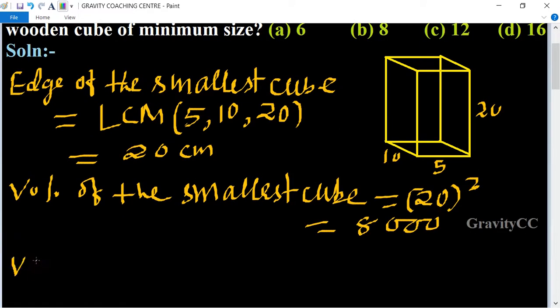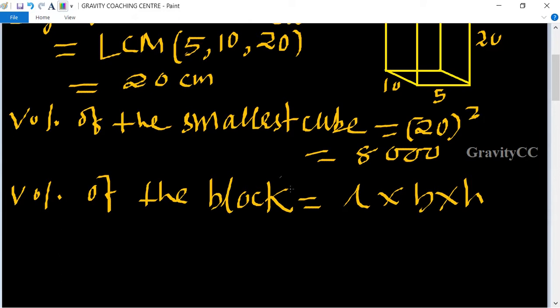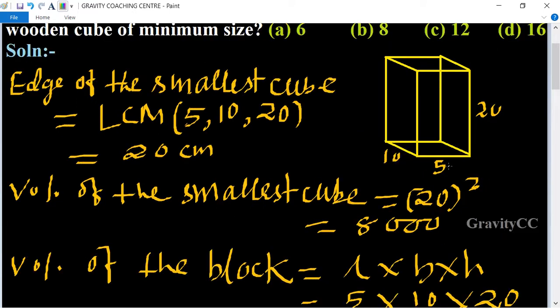Volume of the block equals length times breadth times height. So 5 times 10 times 20 equals 1000 cubic centimeter.